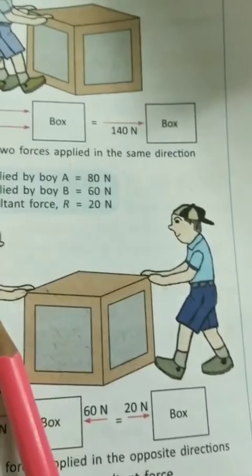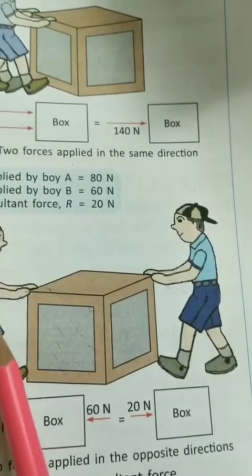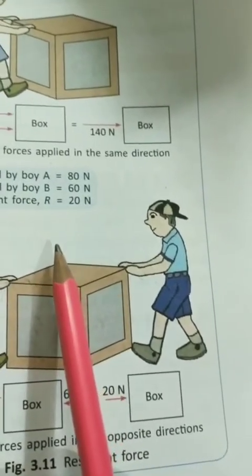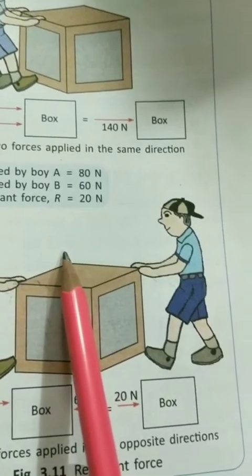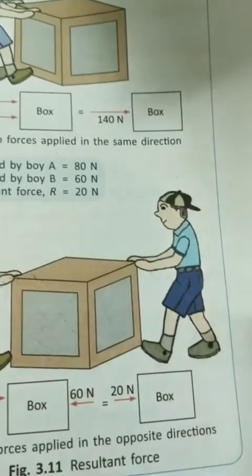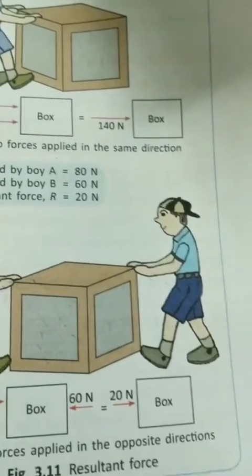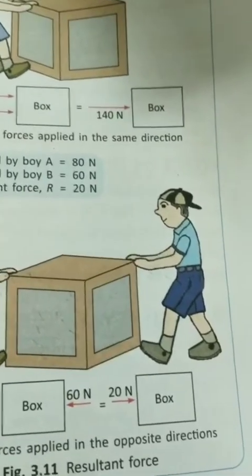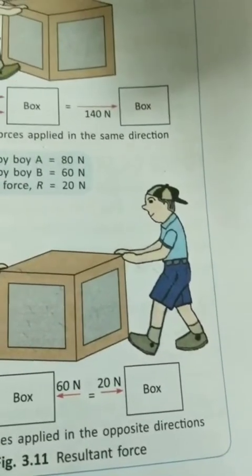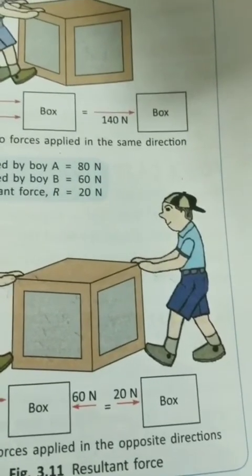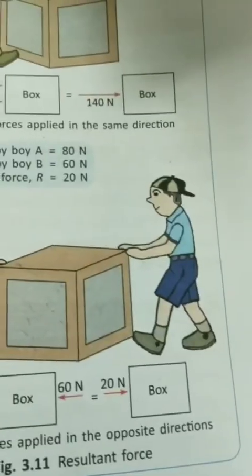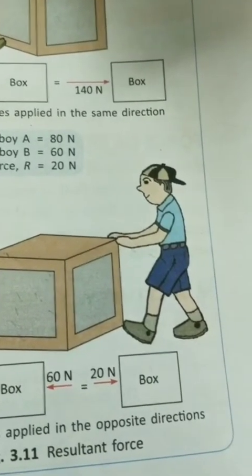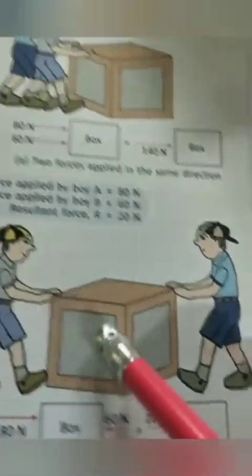Depending on the physical interaction, when two bodies interact with each other directly, the force is a contact force. When the interaction is indirect, it is a non-contact force. Forces are basically categorized into these two types based on whether there is direct or indirect contact between the objects.